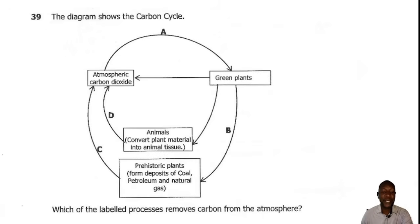Question 39. The diagram shows the carbon cycle. Which of the labelled processes removes carbon dioxide from the atmosphere? Green plants remove carbon dioxide from the atmosphere by the process of photosynthesis. So the correct answer is A.